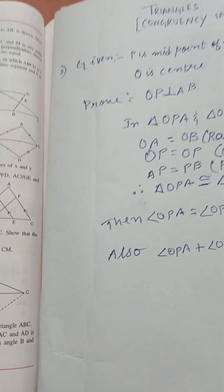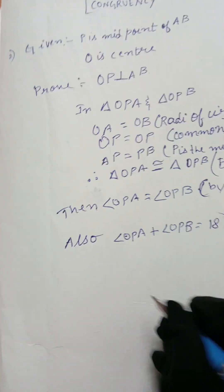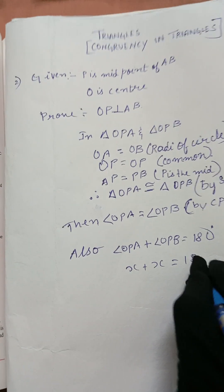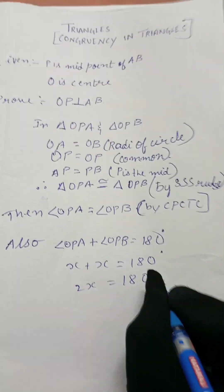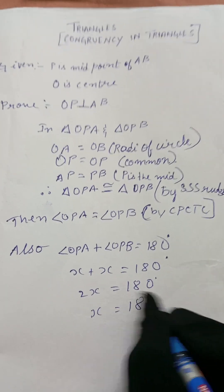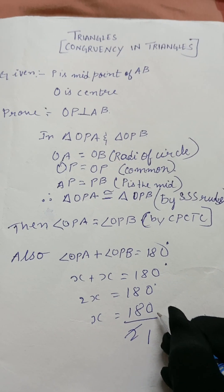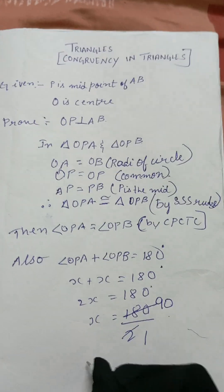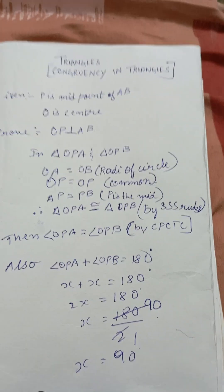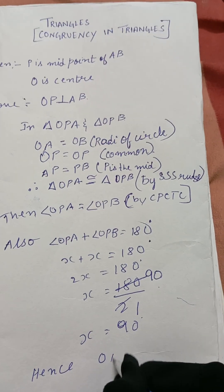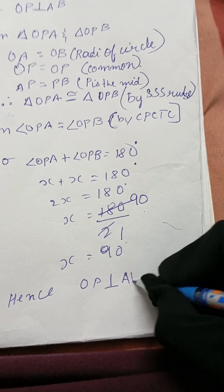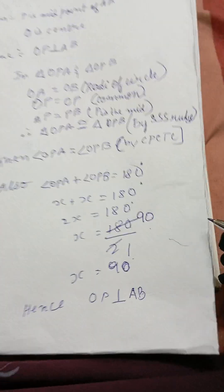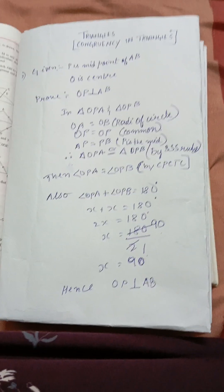We assume angle OPA = angle OPB = x. So x + x = 180°, which gives 2x = 180°, therefore x = 90°. Hence, OP is perpendicular to AB. This completes the proof.